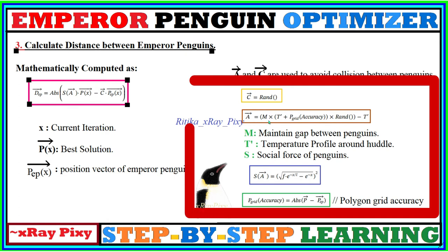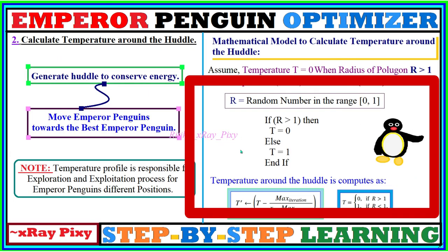For parameter a, the value m is used to maintain the gap between the penguins. During huddling, we cannot have a huddle that is too tight or too loose — if the huddle is loose, penguins lose energy and can freeze; if it is too tight, they cannot move. So we need to maintain the gap between the penguins, and m is used here for that purpose. This incorporates the temperature profile that we computed earlier.